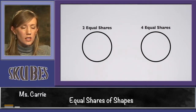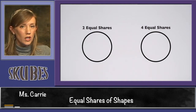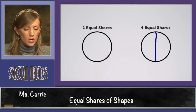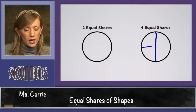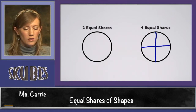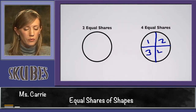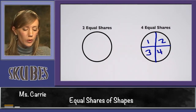Let's look at the second square. We're going to divide this into four equal shares. First, let's divide it in half like we did the first time, and then if we cut it across this way, it gives us one, two, three, four shares that are the same. They're equal.